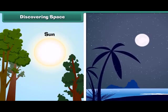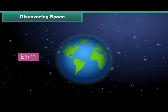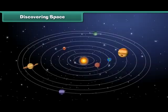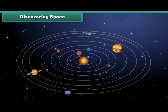The Sun, Moon and the stars that we see in the sky are all located in space. The Earth on which we live is also in space. Everything from the small dust particle to the large planet is placed in space.